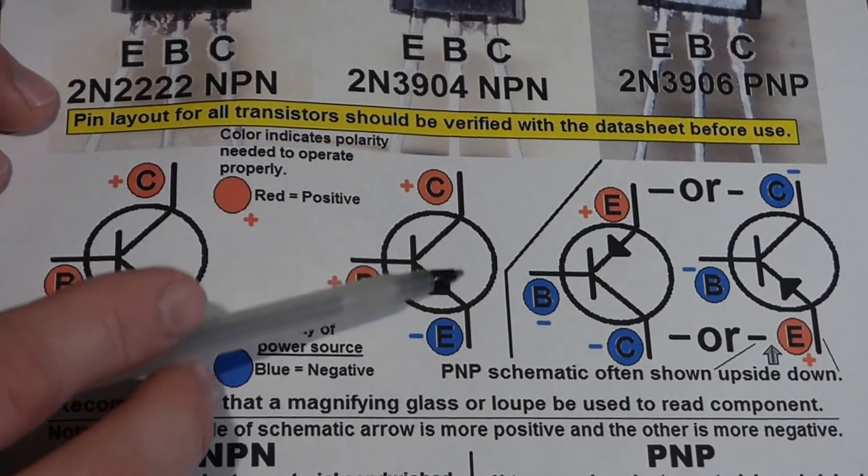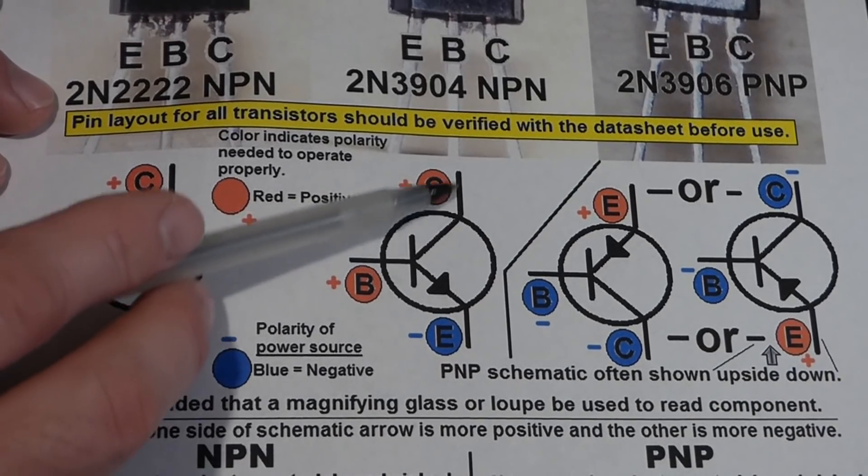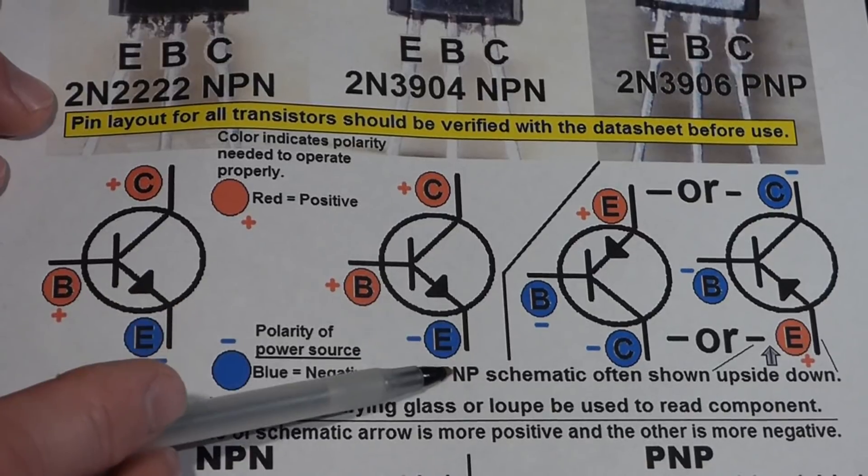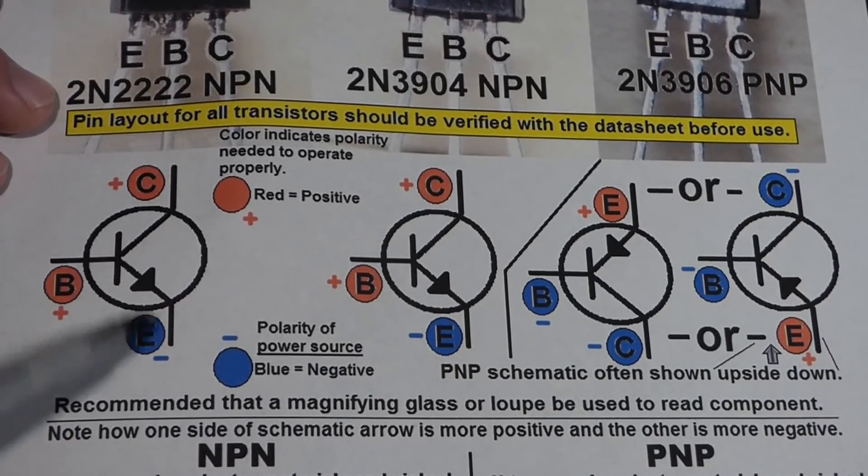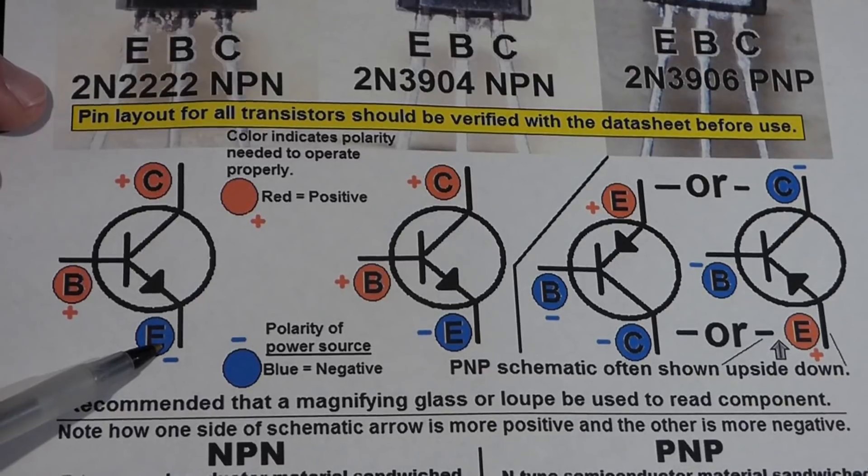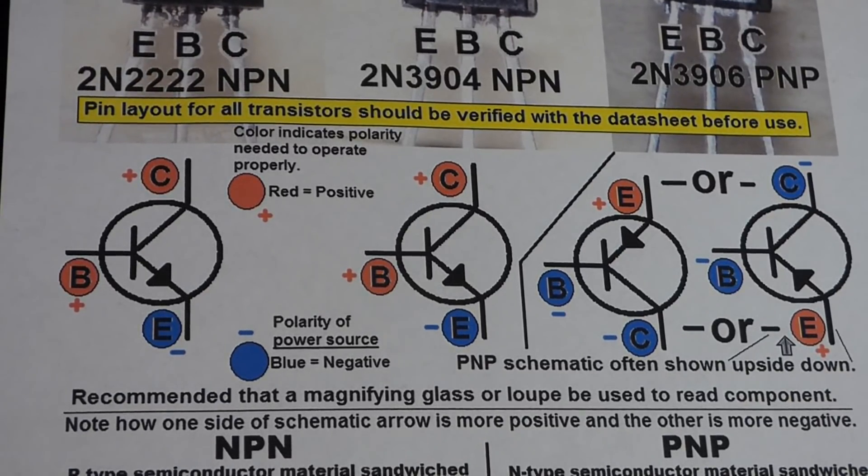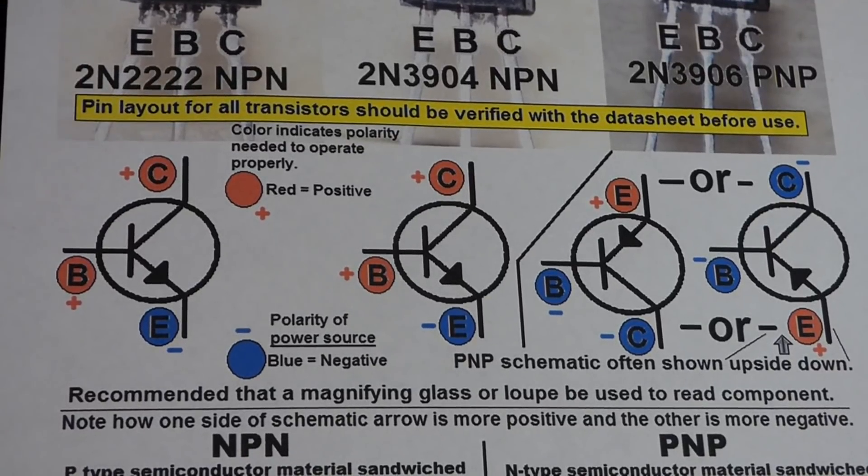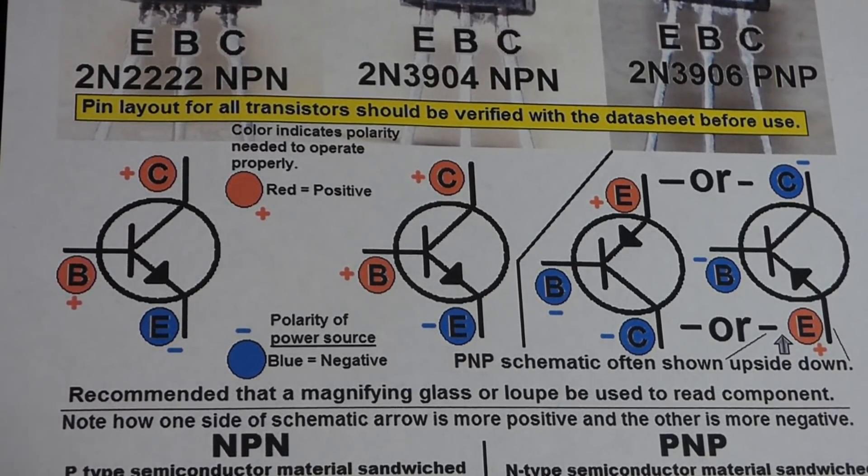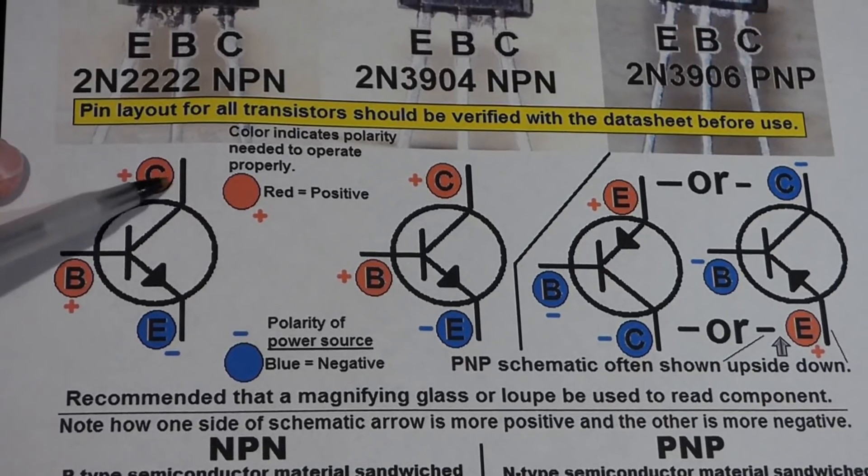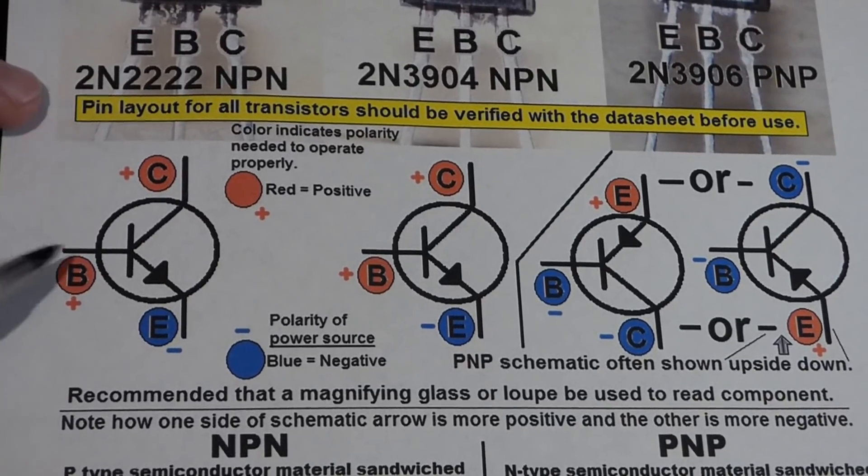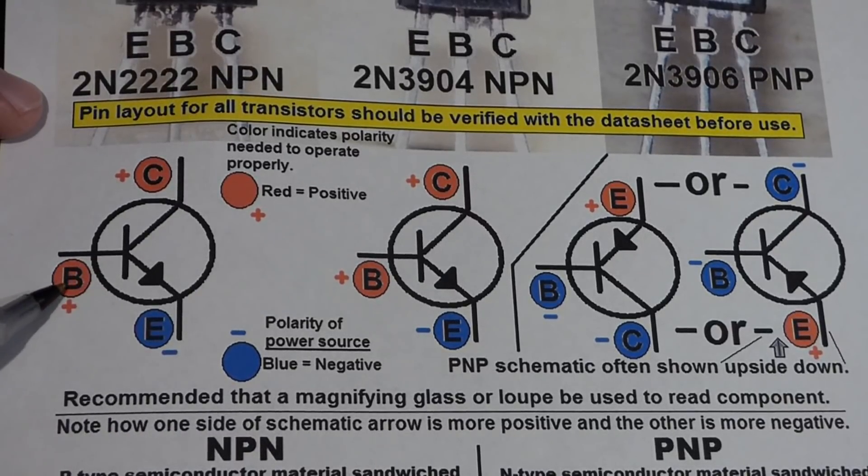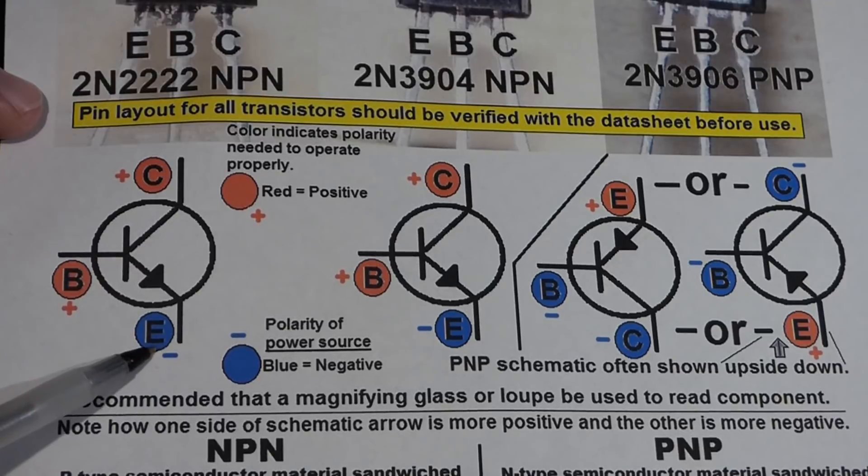But in any case, with the NPN transistors, you want the collector towards the positive side of the power source, and the emitter towards the negative side of the power source. So, I got red for positive, blue for negative. And, of course, you have other components on one or both sides. You don't just normally connect it directly to a power source. That's probably a bad idea. Usually, there's other components. But in any case, with the base now, it needs to be more positive when you want conduction.